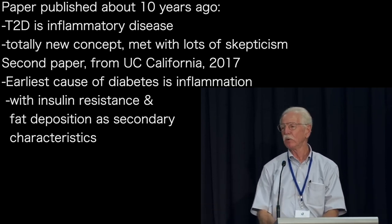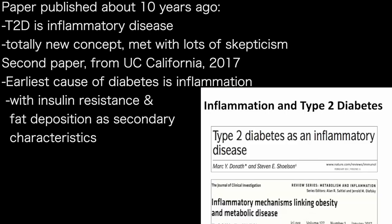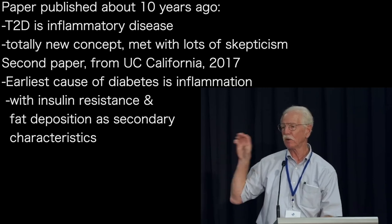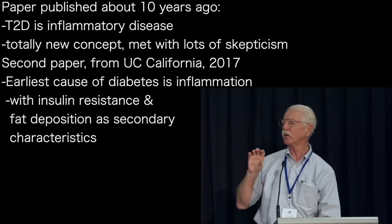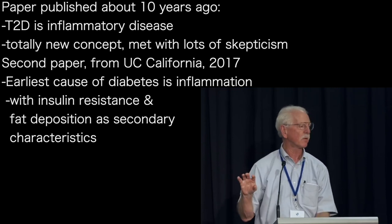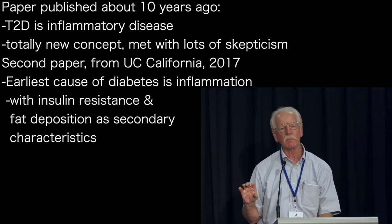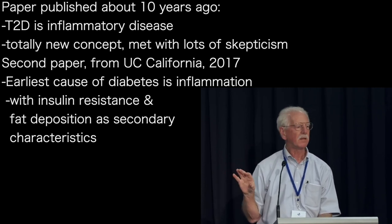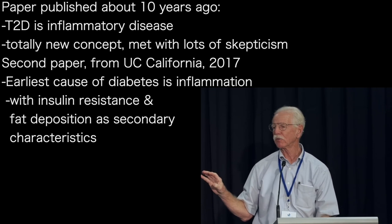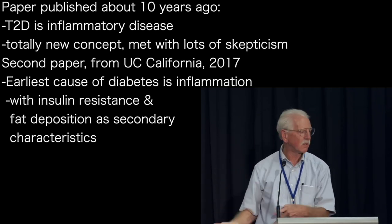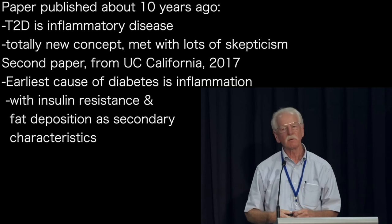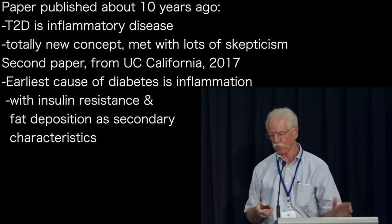It was met with a lot of skepticism. But the bottom reference, by Dr. Gerald Alevsky's group at the University of California, published in 2019, doesn't say diabetes — he says metabolic disease. But he says basically that it appears the root cause, the earliest signs of incipient diabetes, can be found in inflammation — that it appears to be an inflammatory disease with insulin resistance and fat deposition as secondary characteristics. So it's getting very much closer to the underlying factors that differentiate a person who's going to develop diabetes versus one who's not.